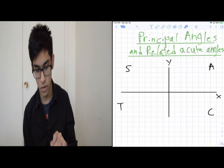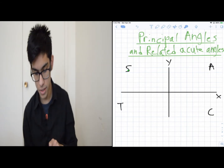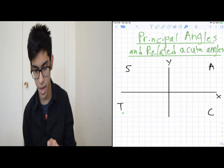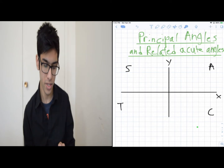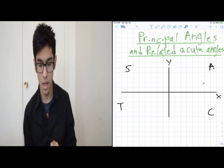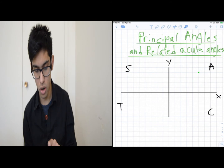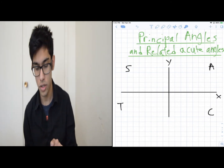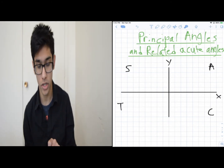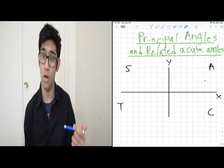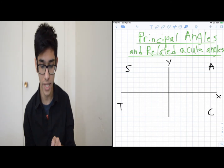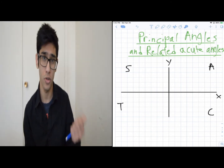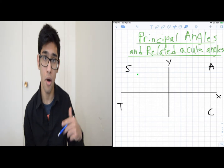If you notice, I have the letters C, A, S, T here — we call this the CAST rule. The CAST rule says that all three trigonometric ratios — cosine, sine, and tangent — are positive in quadrant one, because all angles there are less than 90 degrees.